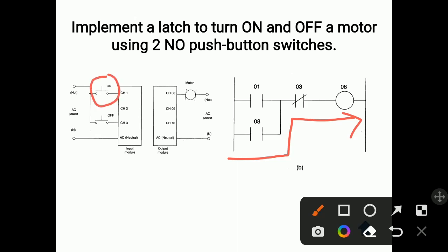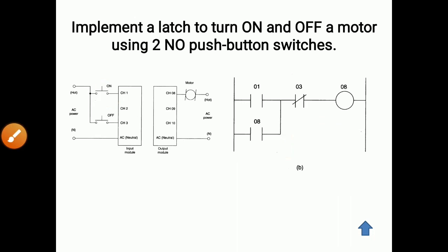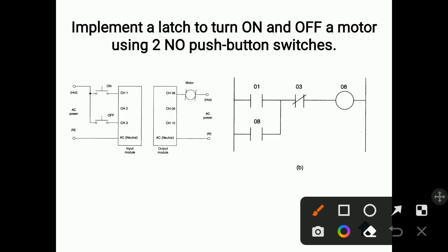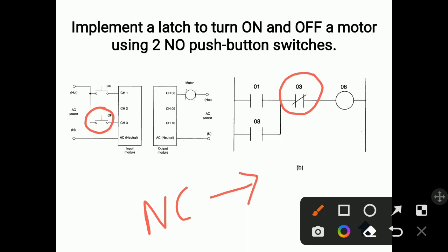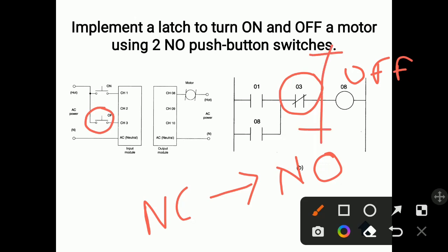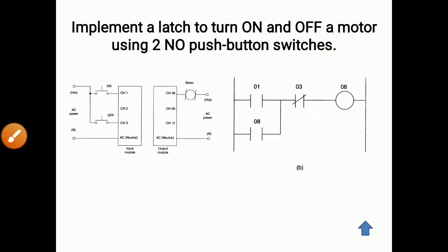Now suppose the motor is continuously on and you want to turn it off — in an emergency situation. We have used one OFF switch here: switch number three, which is normally closed. By pressing that switch, you can turn the motor off. When you press switch number three, it gets open — the normally closed contact becomes normally open — and the motor turns off because the supply gets cut from that position.